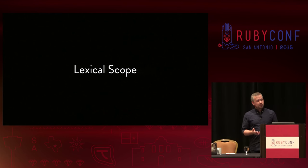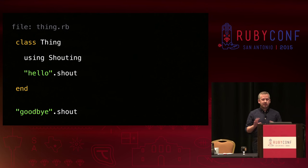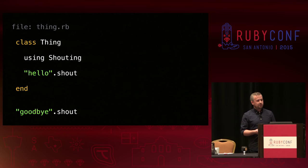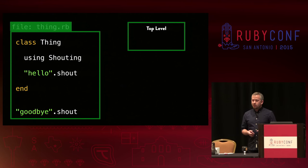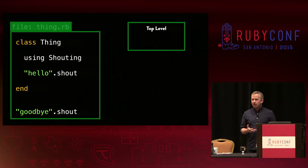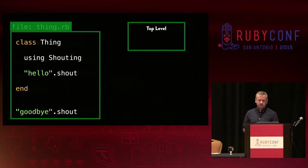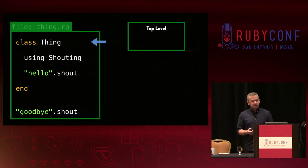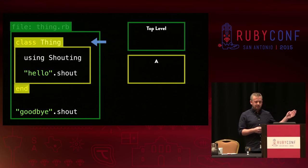To understand lexical scope, we need to learn about some things that happen when Ruby parses our program. As Ruby parses the program, it is constantly tracking a handful of things to understand the meaning of the program. The one we're interested in is called the current lexical scope. When Ruby starts parsing the file, it creates a new structure in memory — a new lexical scope — which holds various bits of information Ruby uses to track what's happening at that point. When we start processing, we create this initial one and call it the top level lexical scope. When we encounter a class or module definition, Ruby also creates a new lexical scope nested inside the current one.